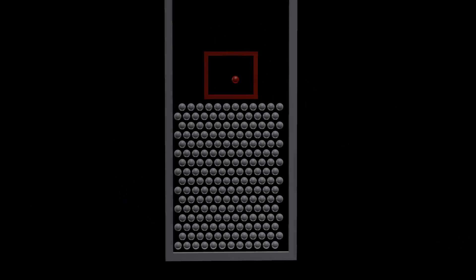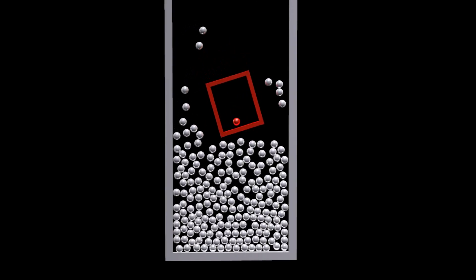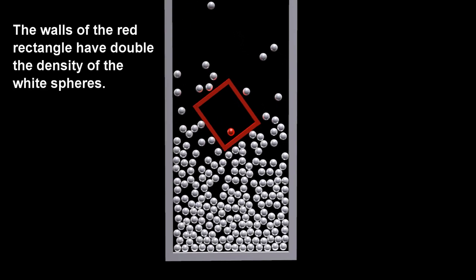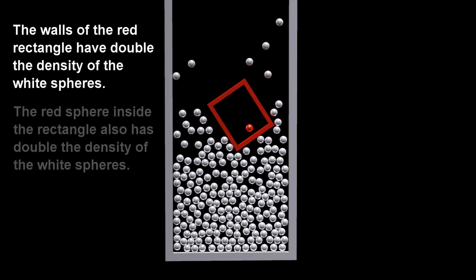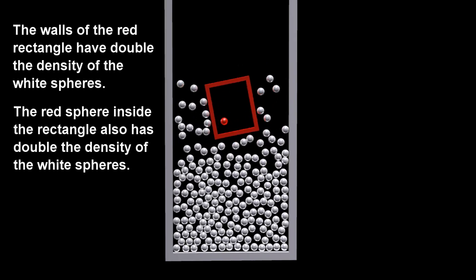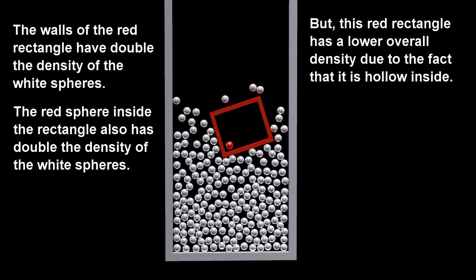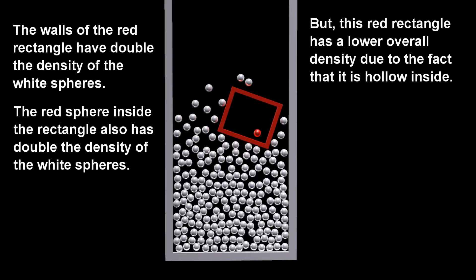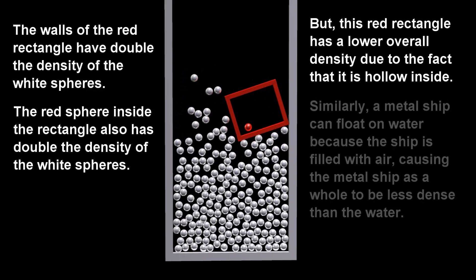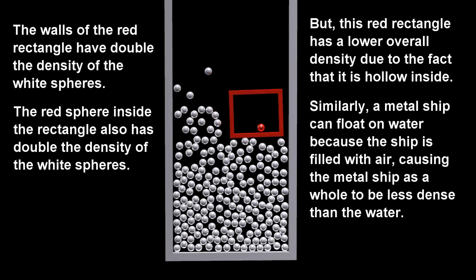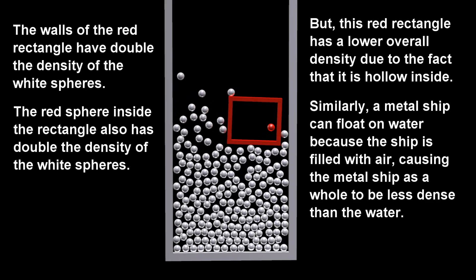Throughout this video, all red objects will have double the density of the white objects. The walls of the red rectangle have double the density of the white spheres. The red sphere inside the rectangle also has double the density of the white spheres. But this red rectangle has a lower overall density due to the fact that it is hollow inside. Similarly, a metal ship can float on water because the ship is filled with air, causing the metal ship as a whole to be less dense than the water.